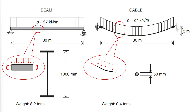If a beam and a cable are both subject to a 27 kN per meter load on a 30 meter span, the beam would have to be 1 meter deep and weigh 8.2 tons, whereas a cable with a 3 meter sag can be just 50 millimeters in diameter and weigh just 0.4 tons. With this result, the immediate reaction would be that cables should be preferred as structural elements in almost all cases. However, this simple comparison does not give the full picture.